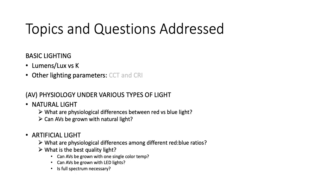The first topic for discussion is basic lighting parameters such as lumen or lux compared to the K values you see when you purchase different light bulbs. I'll also briefly mention CCT and CRI values. Then we'll get into the actual experiments and data — what happens when you grow African violets with natural light, and the differences when grown in high red versus no blue. We'll look at physiological differences among different red-to-blue ratios, what the best quality of light is, whether AVs can be grown with one single color temperature, with LED lights, and whether full spectrum lights are necessary.